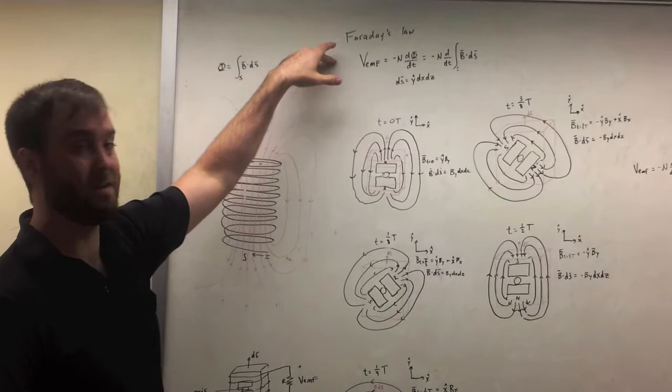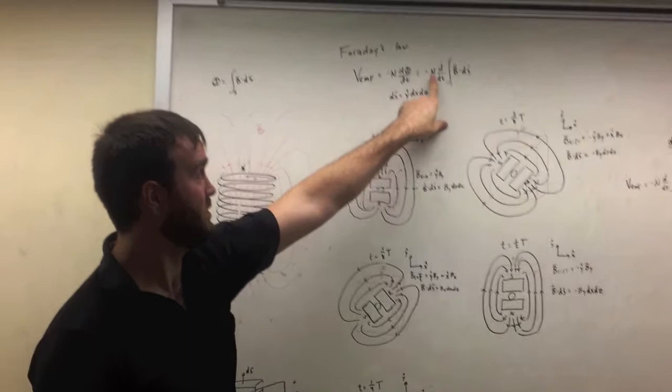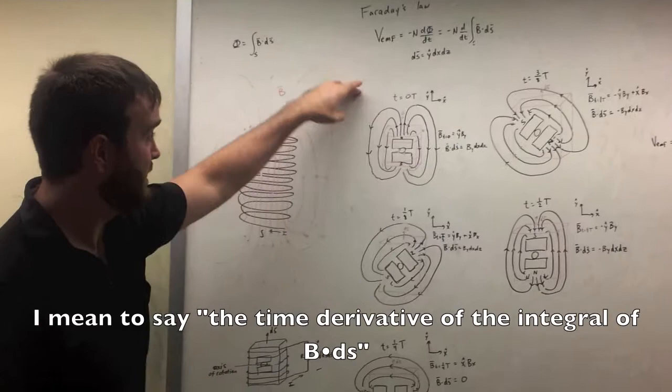Today we're going to discuss how Faraday's Law is the basis for which electric generators are built. So we have this equation right here, the voltage induced equals the number of turns times the time derivative of the B dot dS.